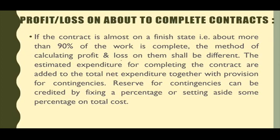Isme ek point hai yahan par. The estimated expenditure for completing the contracts are added to the total net expenditure together with provision for contingency. Hum apne jo ab tak ke kharche ho chuke woh, or jo ho sakti hai woh to add karte hai, plus ek aur provision for contingency bhi add karte hai, kahi aur agar by chance koi zaroori kuch kharcha ho gaya, toh woh bhi uska risk cover kar lete hai.